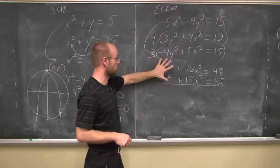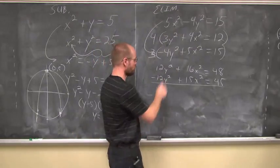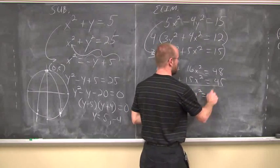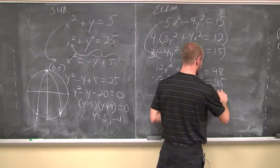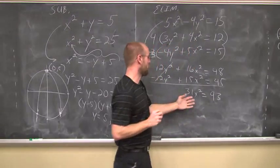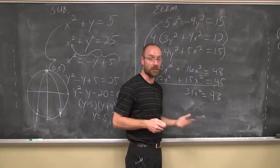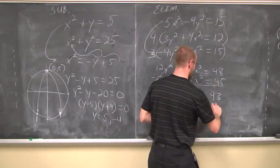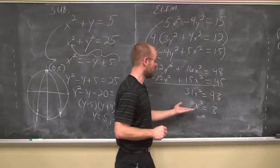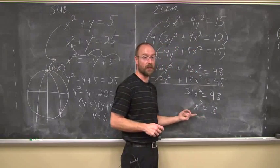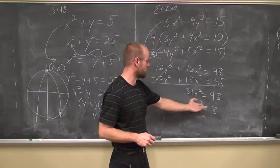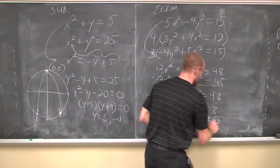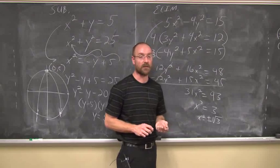And now I'm ready to eliminate by the method of adding them together. 12y squared minus 12y squared, no more y squareds. 16x squared and 15x squared is 31x squared. 48 and 45 is 93. And now let's see, can I solve this for x? I can divide both sides by 31. Good news is 93 is divisible by 31. And I get 3. Now to continue solving for x, I've got to introduce that square root, because this is x squared equals 3. So x equals plus or minus the square root of 3. So I found two values for x.